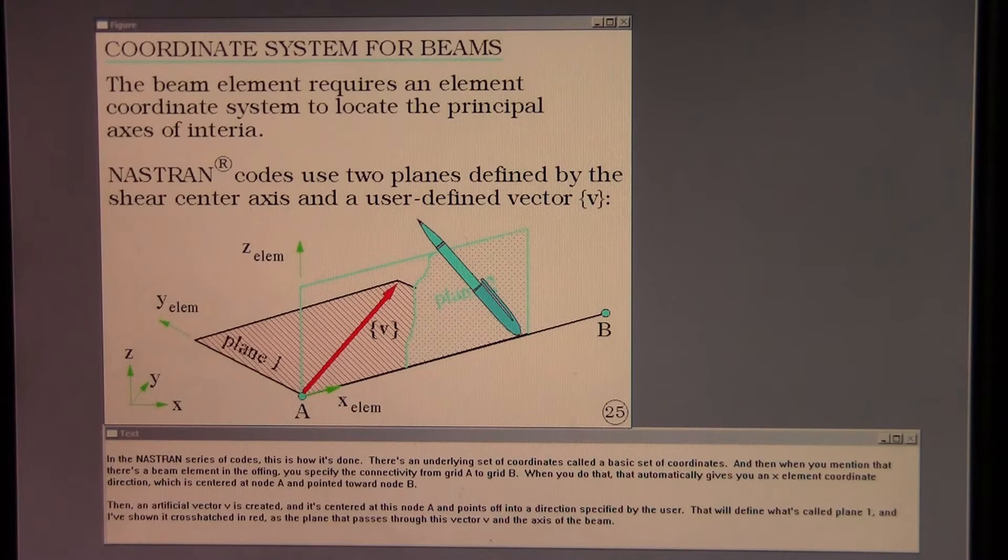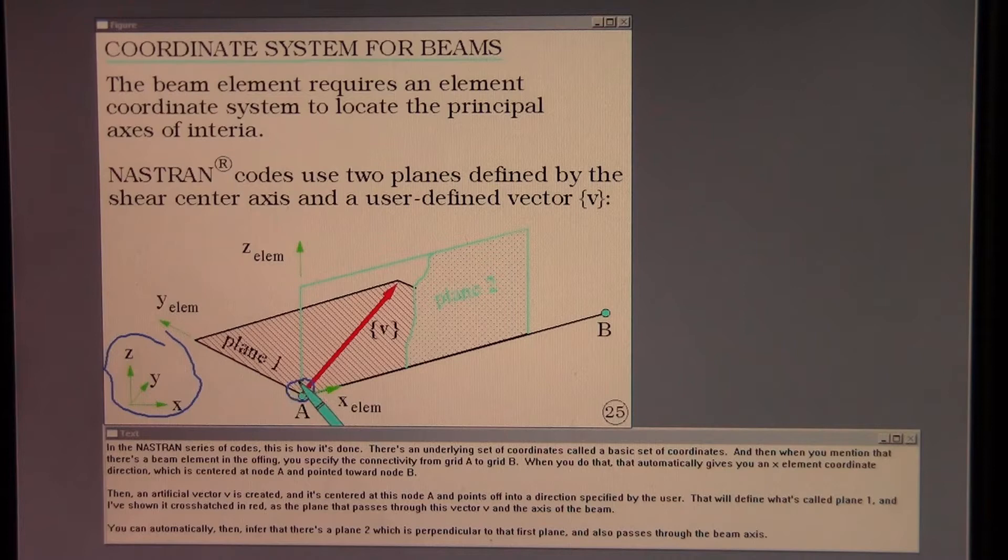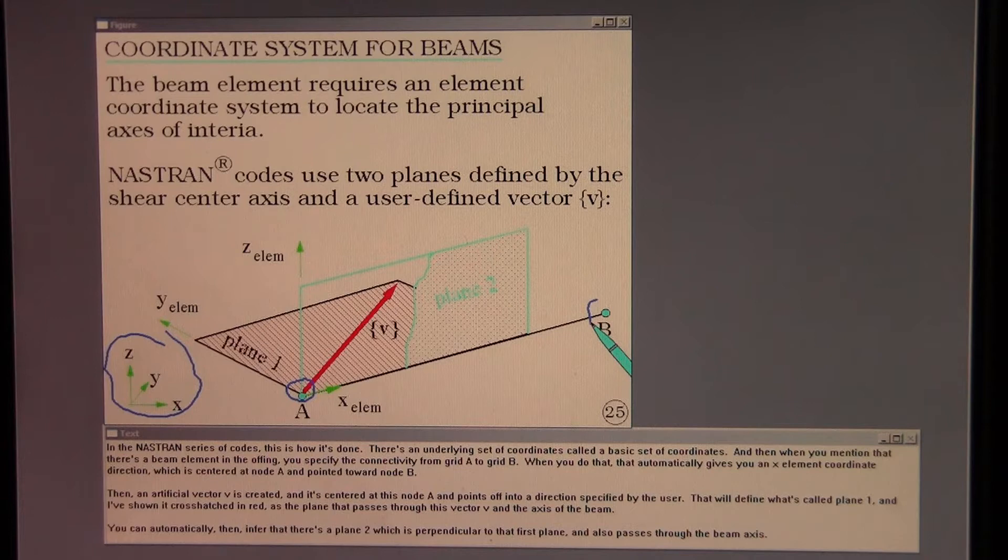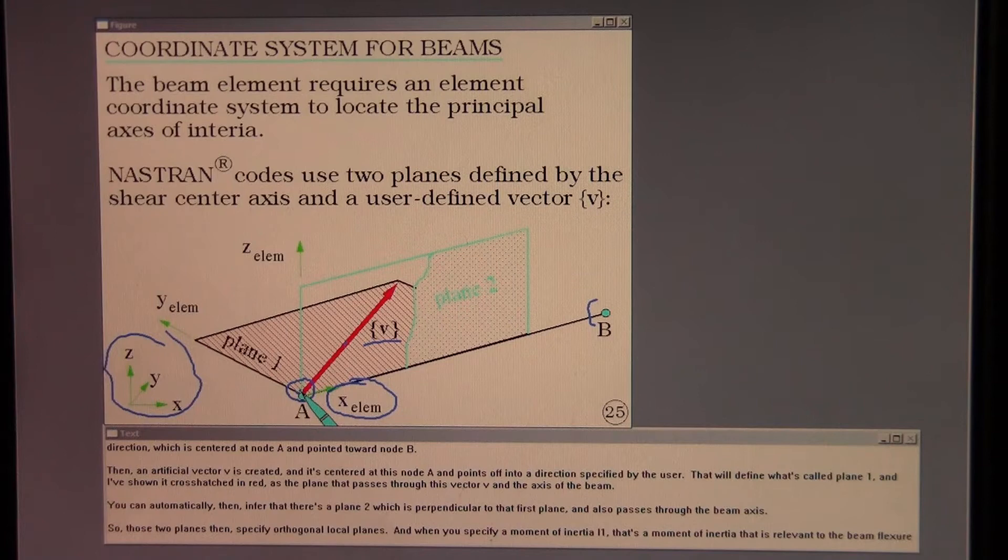And in order to do that we need to develop element coordinates. In the Nastran series of codes, this is how it's done. There's an underlying set of coordinates called a basic set of coordinates. And then when you mention that there's a beam element in the offing, you specify the connectivity from grid A to grid B. When you do that, that automatically gives you an X-element coordinate direction which is centered at node A and pointed toward node B. Then an artificial vector V is created and it's centered at this node A and points off into a direction specified by the user.